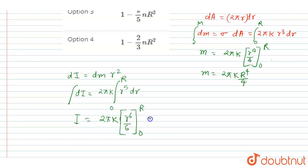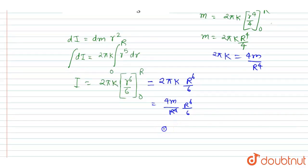So after putting the limit, you will get 2πk, okay, so you can write here 2πk into r to the power 6 by 6, right? So it will be this. Right, now you can see the m is this, so you can replace 2πk by 4m by r to the power 4. So just replace this 2πk by 4m by r cube to the power r to the power 6 by 6. So now you can see here 2/3 m r square is your answer.